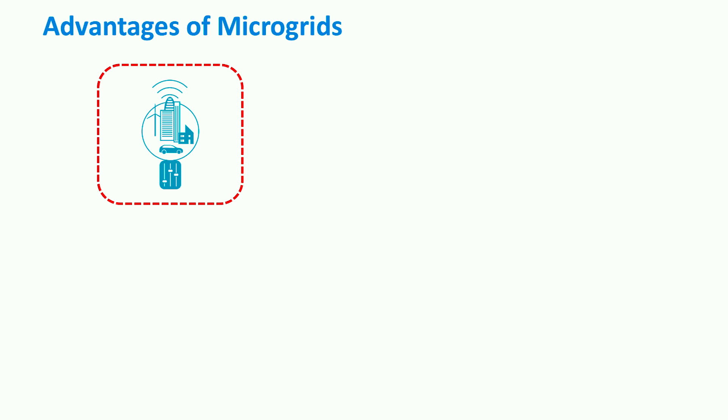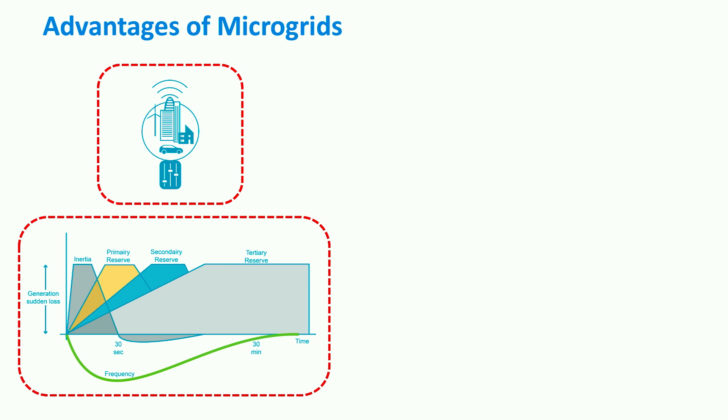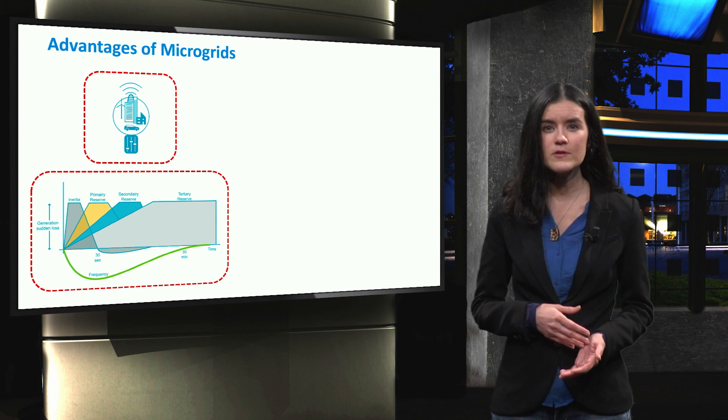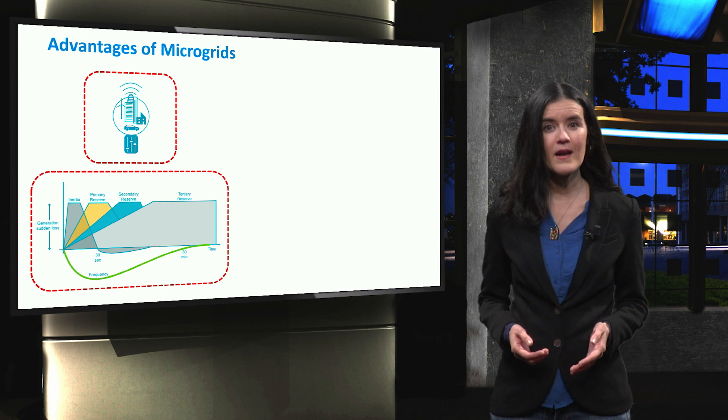Also, microgrids are less vulnerable when they are subject to disturbances or faults. This is possible because they can operate in islanded mode.